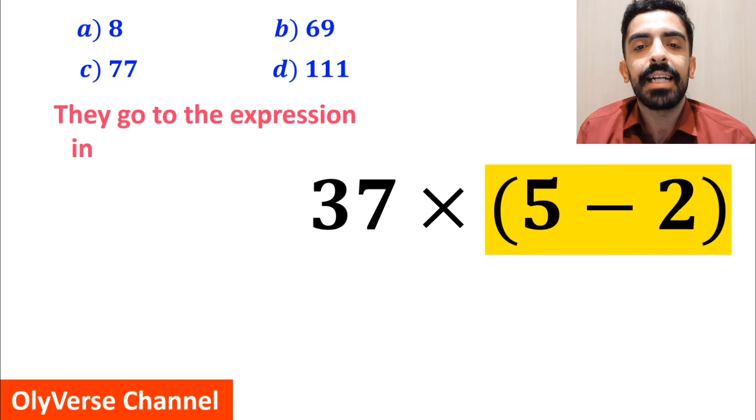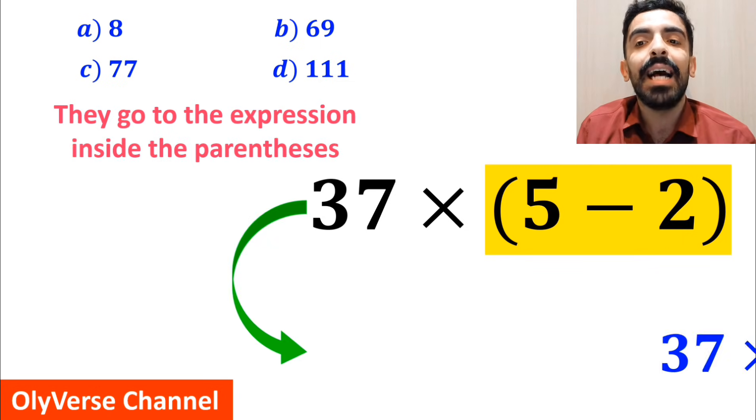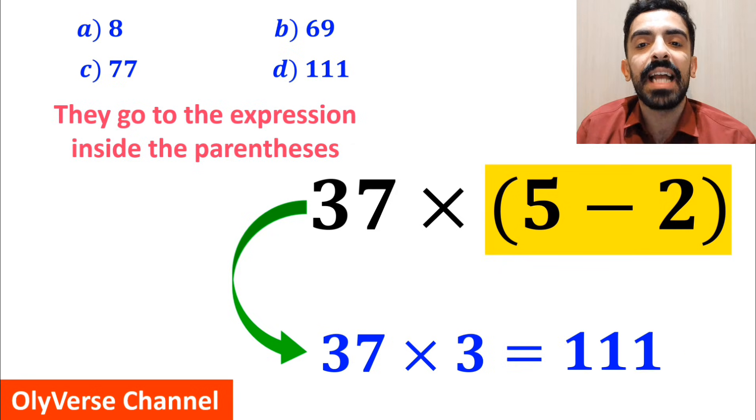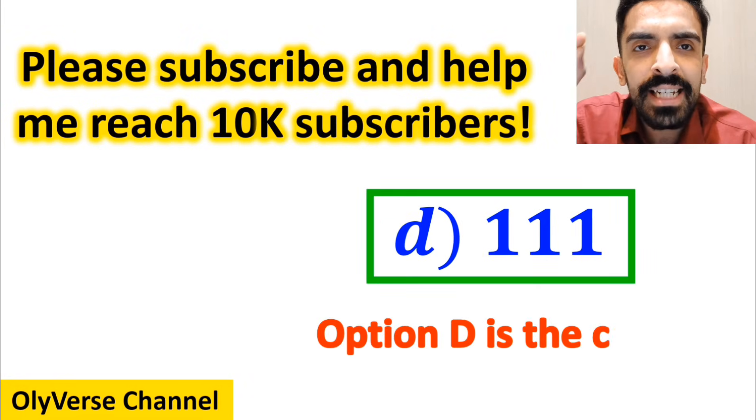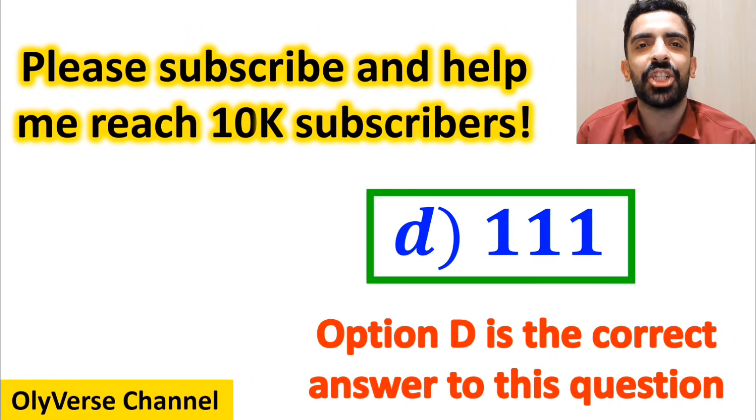In the final step, they go to the expression inside the parenthesis and simplify to 37 × 3, which eventually gives them the answer 111. Then without any hesitation, they quickly say that option D is the correct answer to this question.